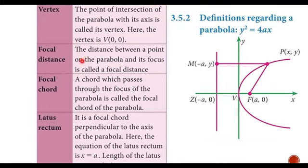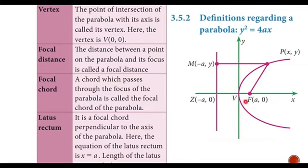Focal distance — the distance between a point on the parabola and its focus; FP is the focal distance. Focal chord — a chord which passes through the focus of the parabola is called the focal chord. Latus rectum — it is the focal chord perpendicular to the axis of symmetry. So the latus rectum is a focal chord that is perpendicular to the axis.